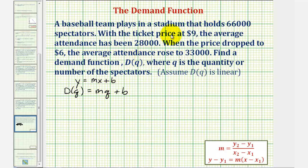So from the given information, we'll find the slope of the line. And then from there, we can use point-slope form of a line to find D(q).